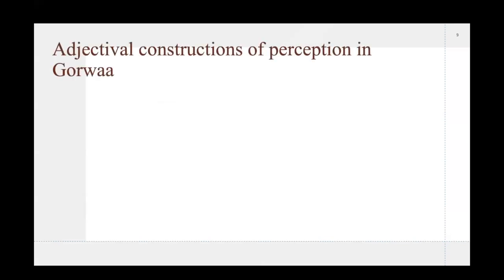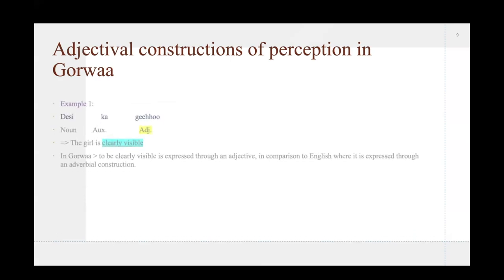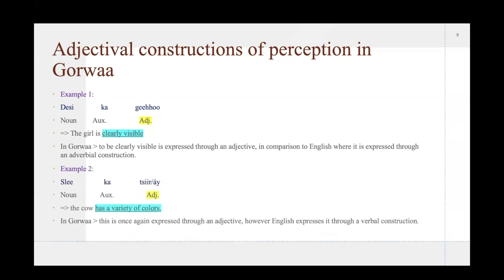So, first of all, let's move on to the first way of expressing perception in Gorwaa, which is the adjectival constructions. We have example number one, dasi ka geho. This means the girl is clearly visible. So, as you can see that in English this is expressed through an adverbial construction. However, in Gorwaa, to be clearly visible is expressed through an adjective, so it's one singular lexeme. Example two, we have thle ka tiraay. The cow has a variety of colors. In Gorwaa, this is, again, expressed through an adjective, so one singular word. However, in English it's through a verbal construction, to have a variety of colors.